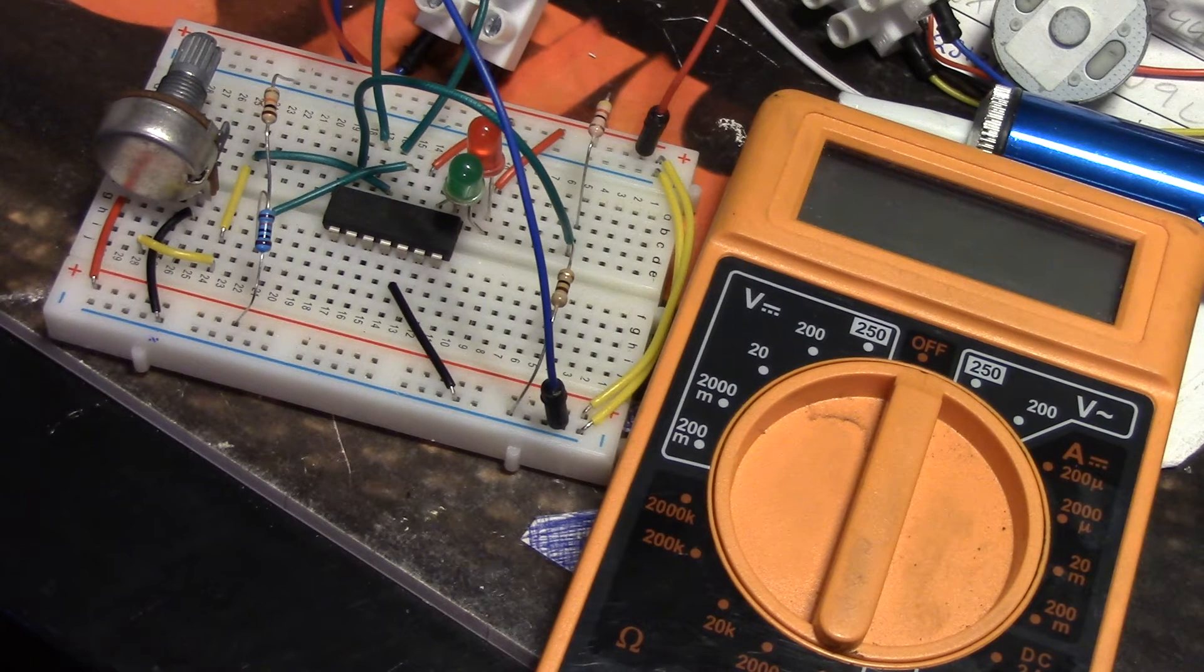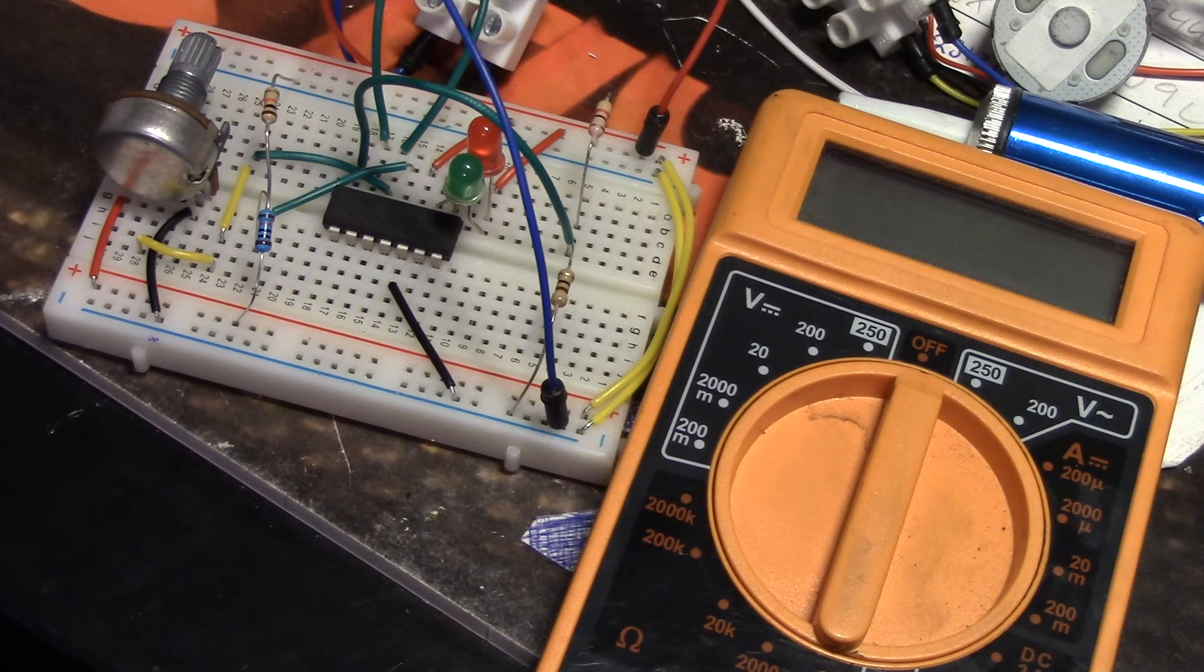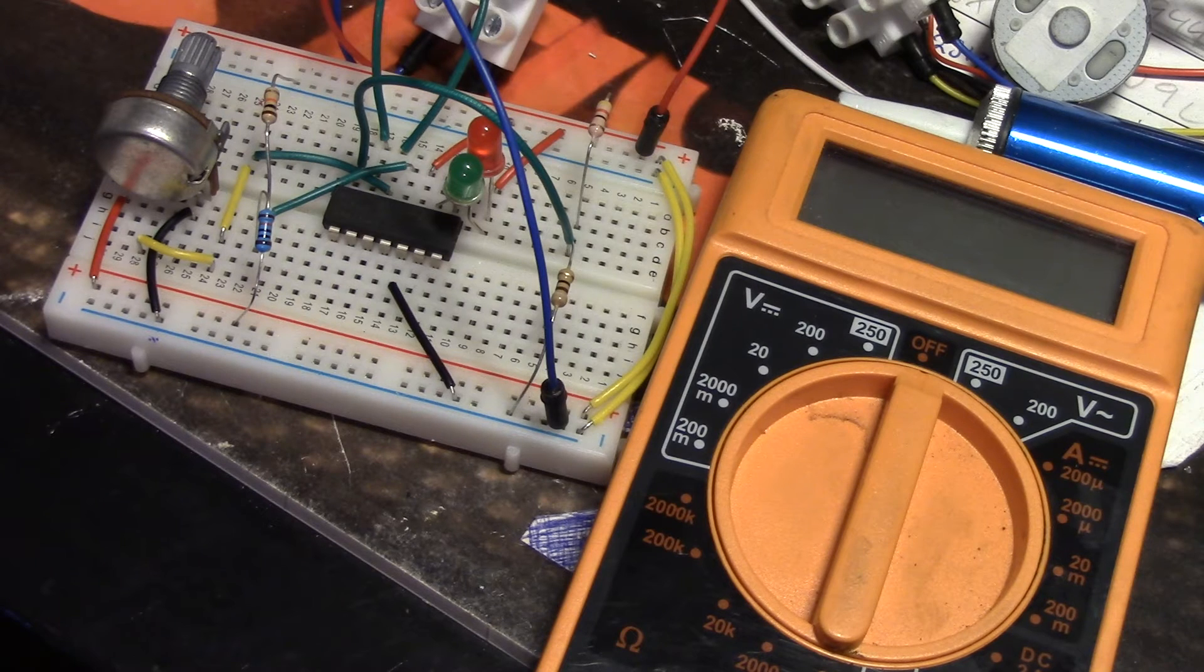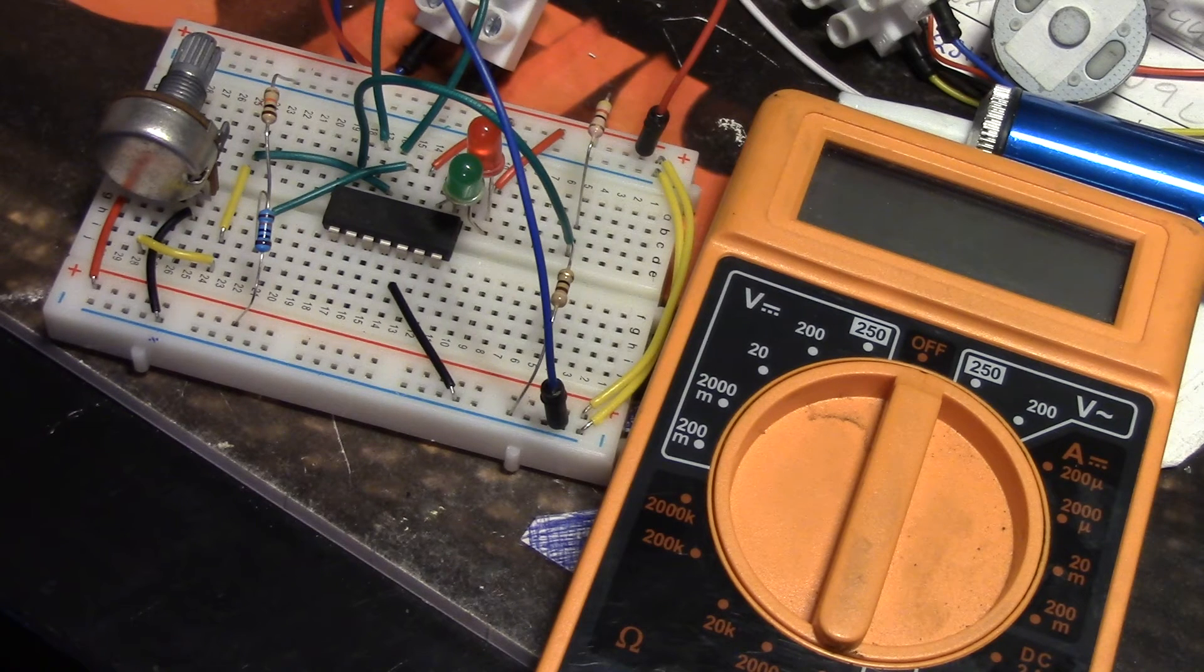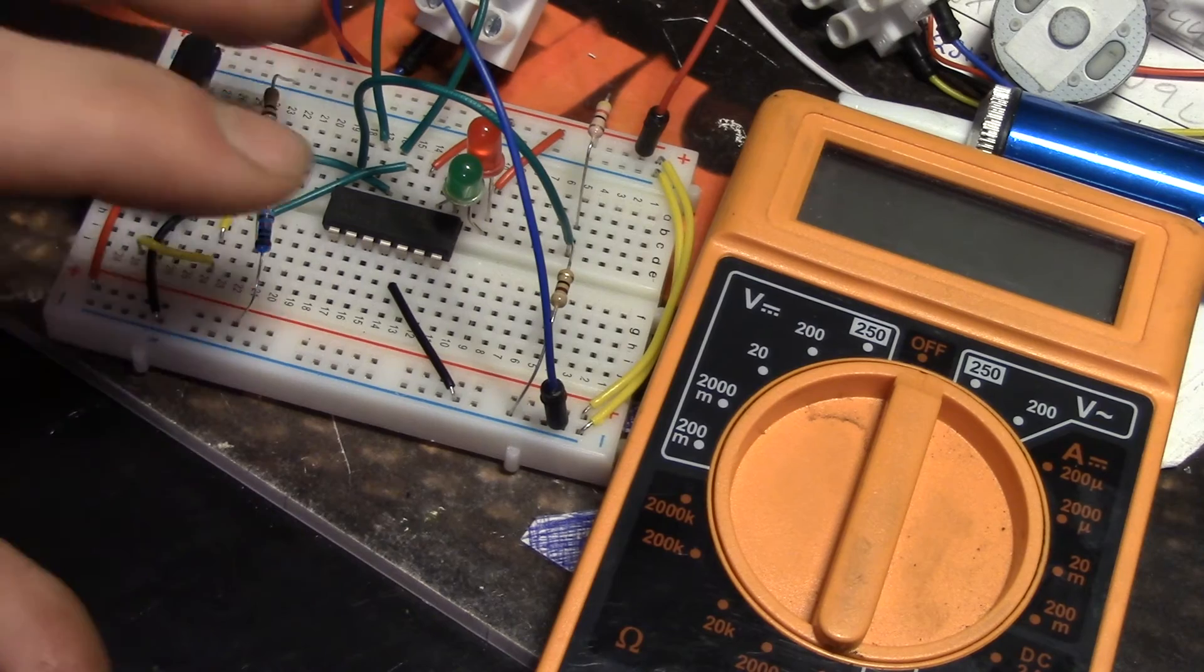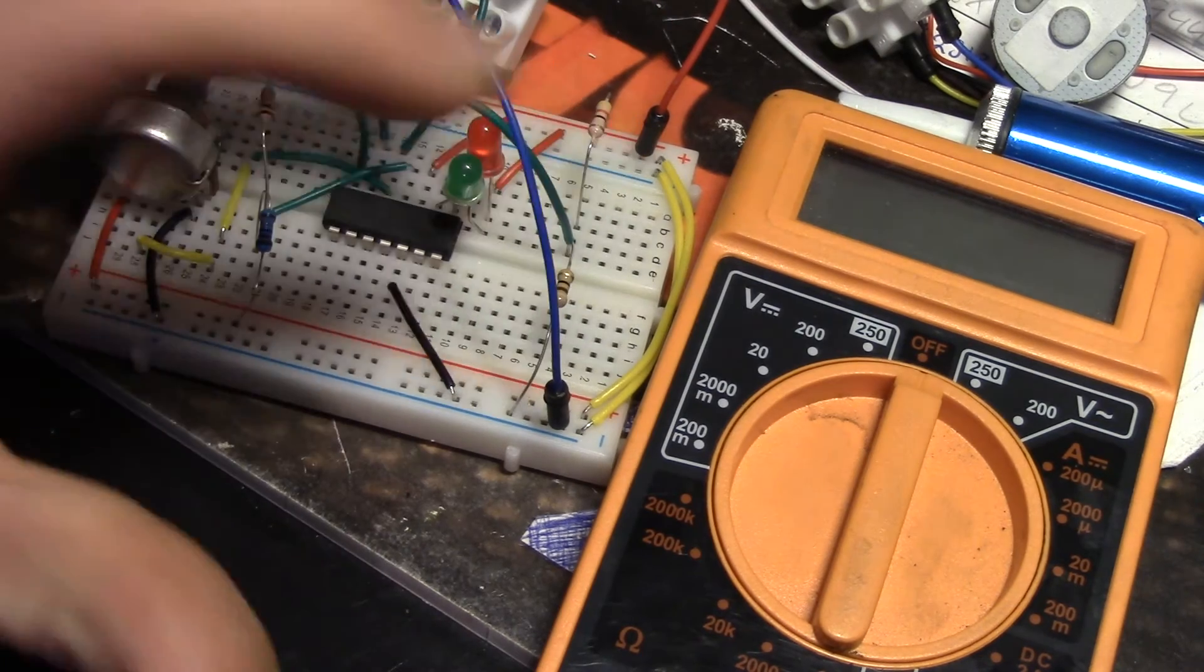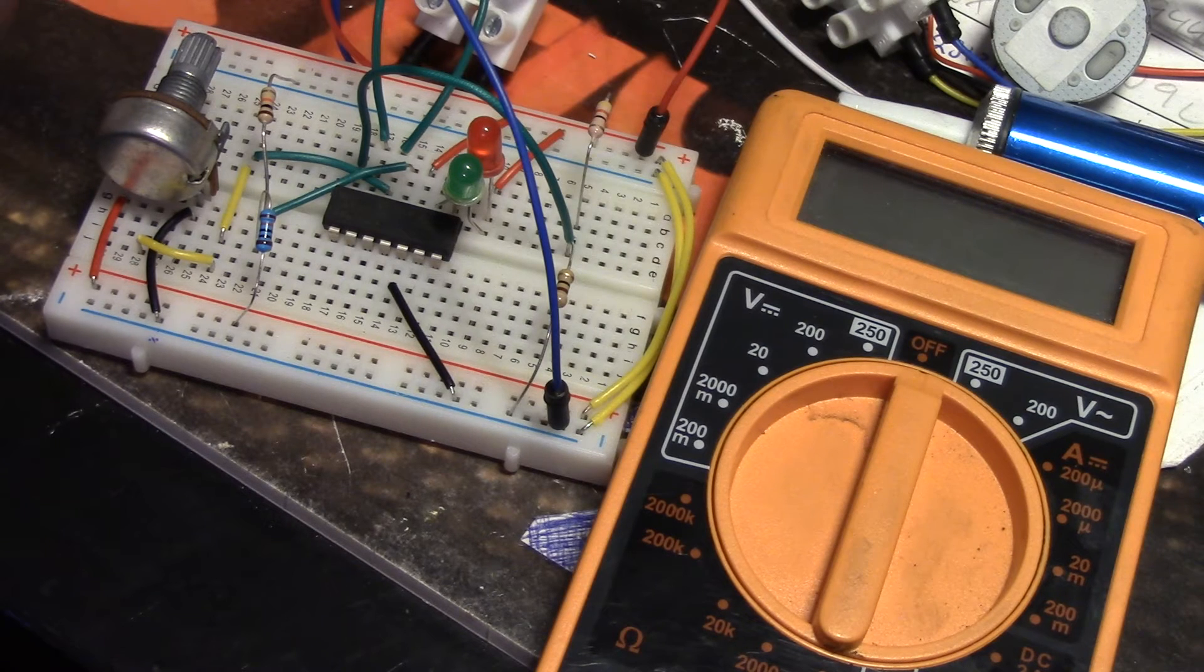So basically you have two analog inputs. Let's say you hook up a potentiometer or just something else that has a variable voltage, and a fixed voltage that you set yourself using some resistors. You can monitor voltages on different devices.